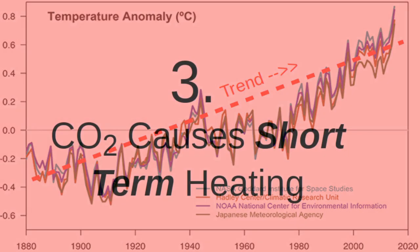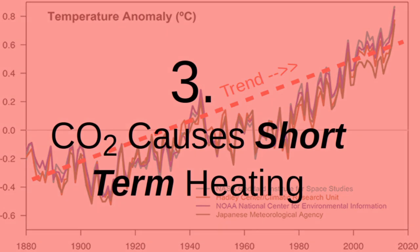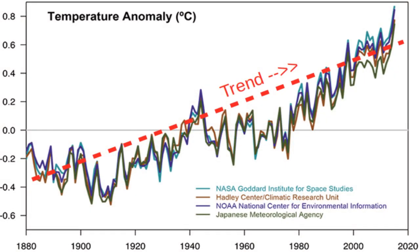CO2 causes short-term heating or flash heating. Our culture emits a lot of CO2 into the atmosphere and this CO2 sticks close to the surface. And because CO2 absorbs infrared back radiation at night, our lower atmosphere starts to warm — very little bit.